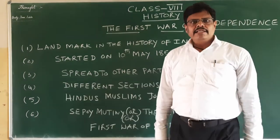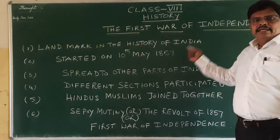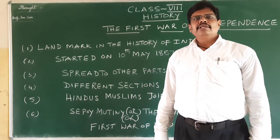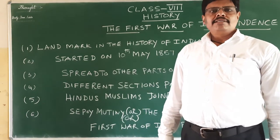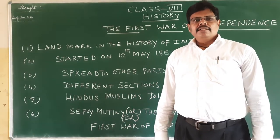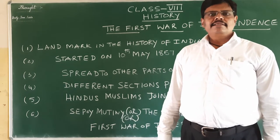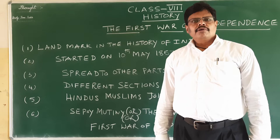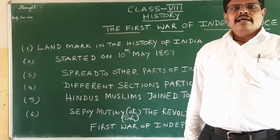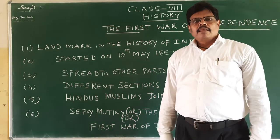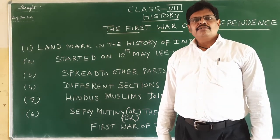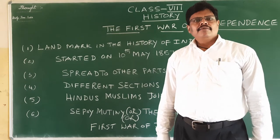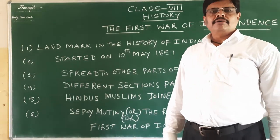This revolt of 1857, which is also called the first war of independence — the British termed this revolt as a sepoy mutiny because it was started by the sepoys of the East India Company. But historians of India regarded this revolt as the first war of independence because it was an attempt to overthrow the British rule, and all sections of Indian society, including Hindus and Muslims, joined together to fight against the British rule.